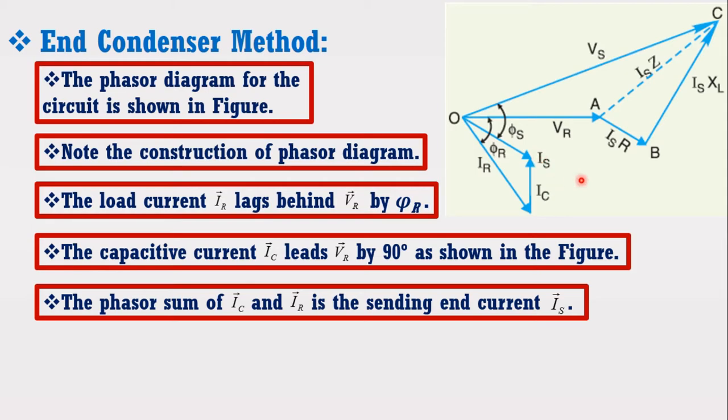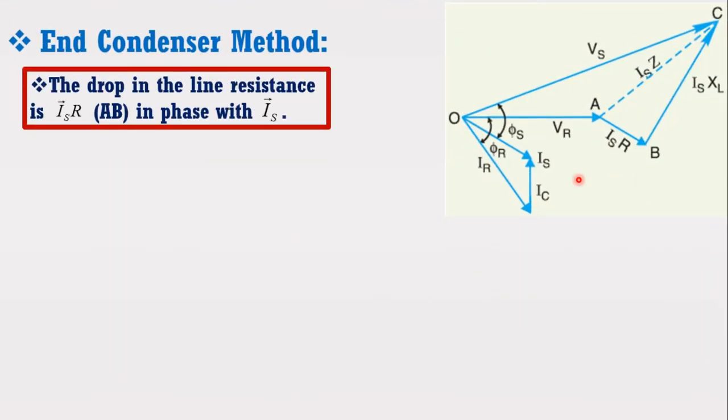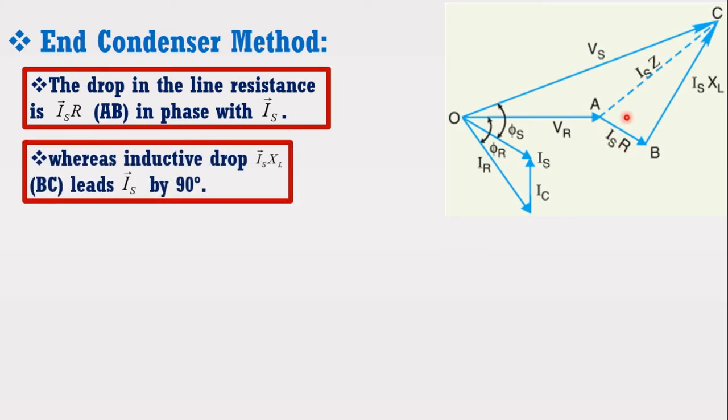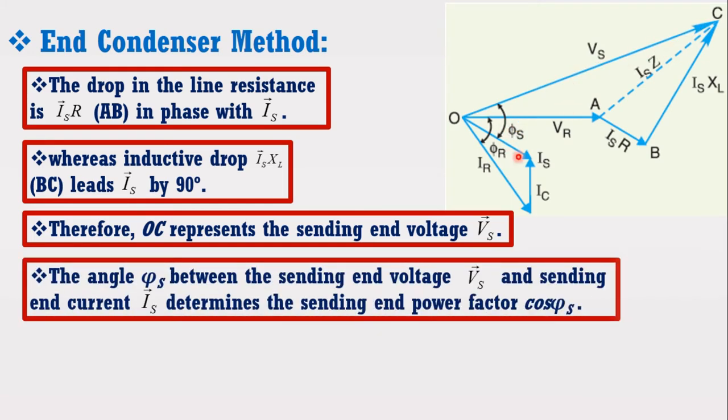The drop in the line resistance is ISR, AB in phase with IS, whereas inductive drop ISXL BC leads IS by 90 degrees. Therefore, OC represents the sending end voltage Vs. The angle phi s between the sending end voltage Vs and sending end current IS determines the sending end power factor cos phi s.